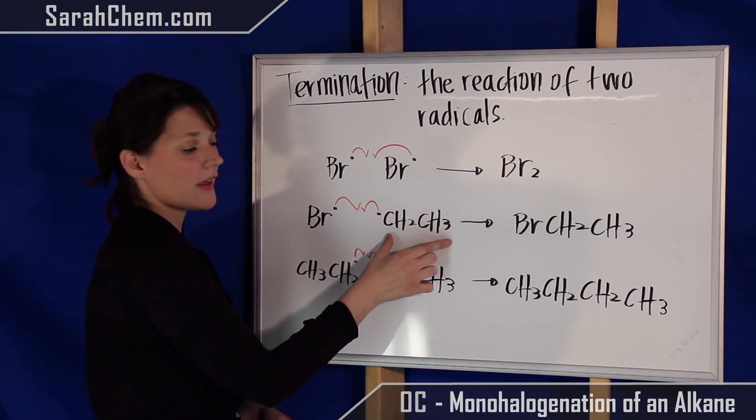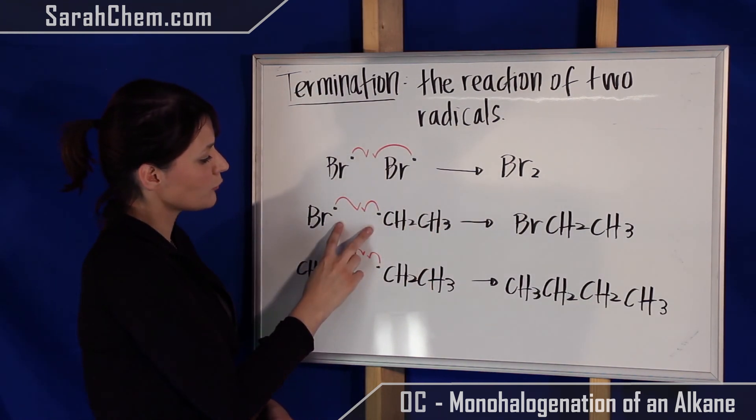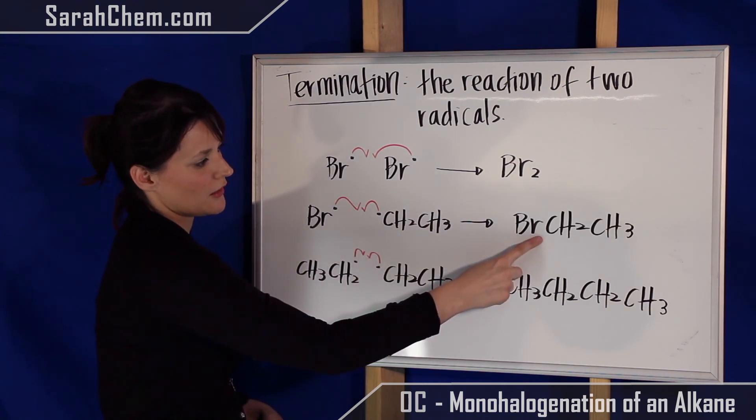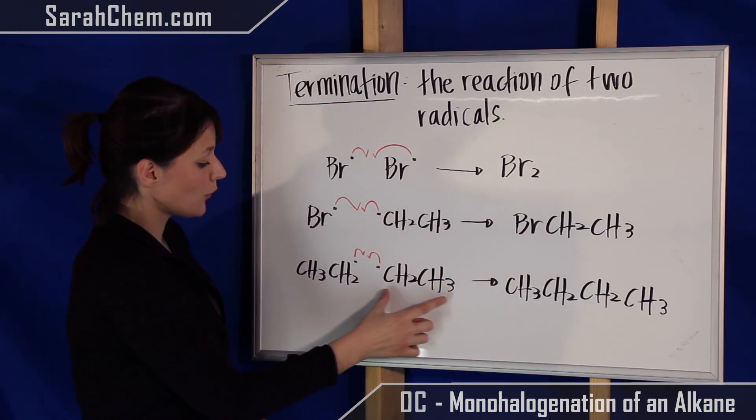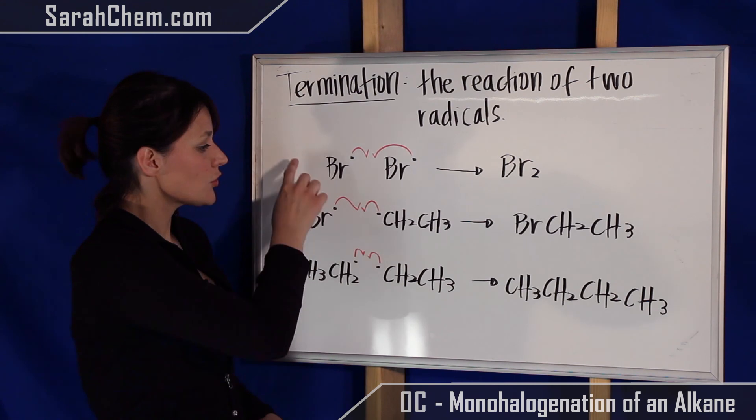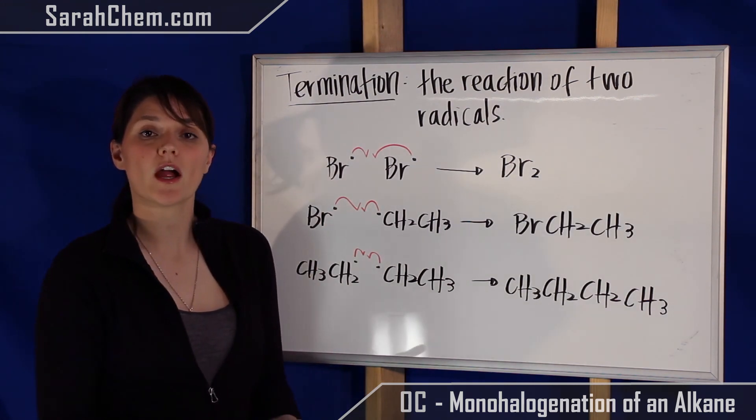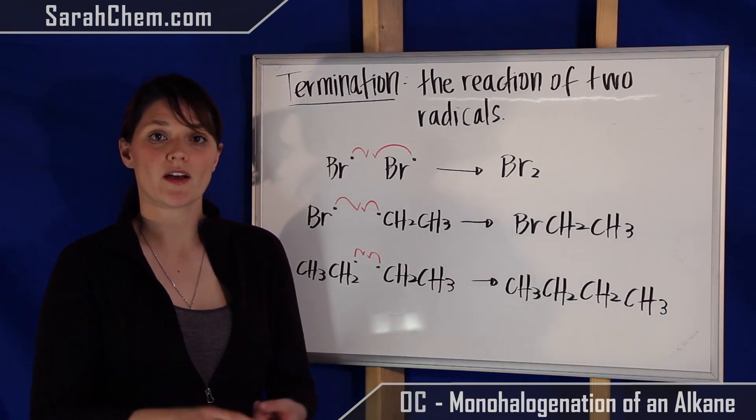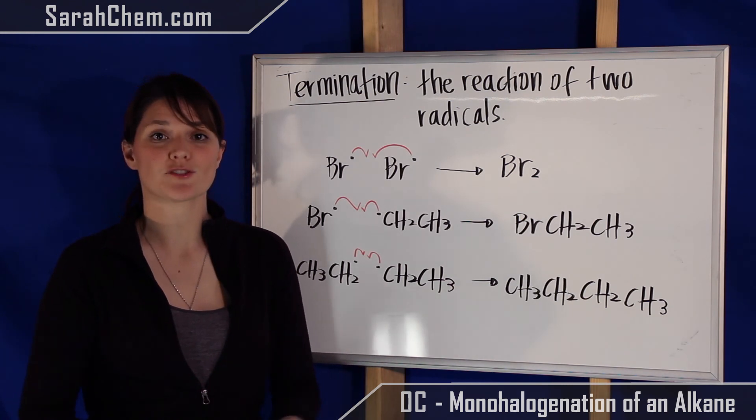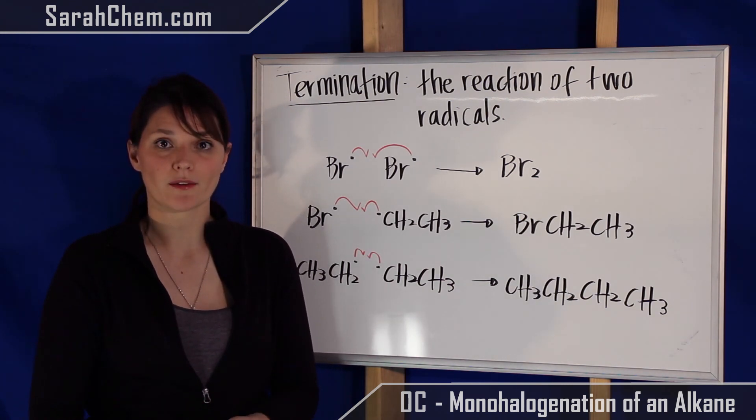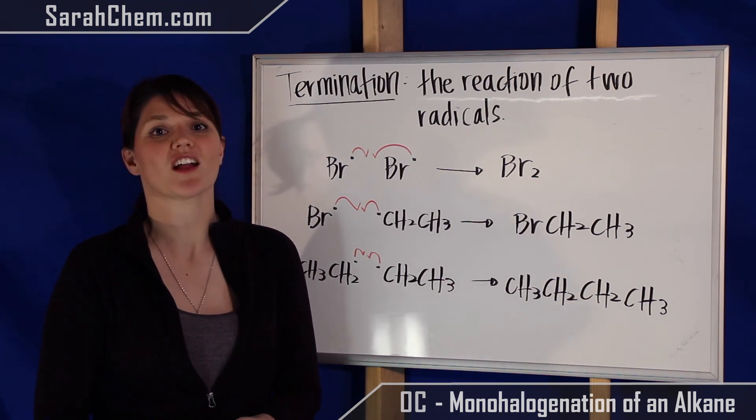Or we could have bromine and ethane come together with each radical joining together, forming the bond between these two. Or we could have had two ethane radicals come together. So these are the three options we have for our termination phase. So you have initiation, propagation, and termination. The three phases of a radical mechanism in the monohalogenation of an alkane.